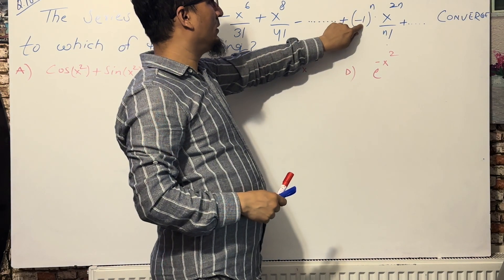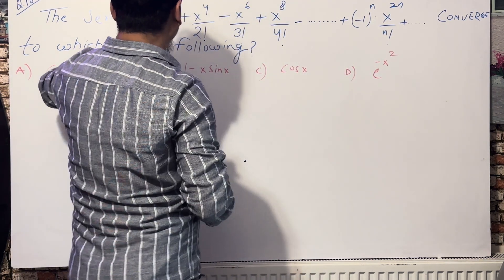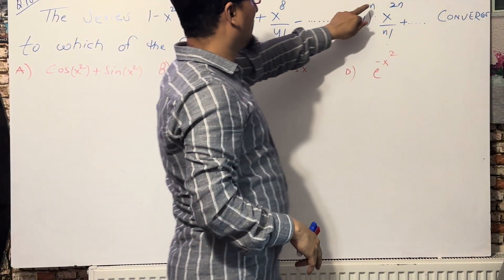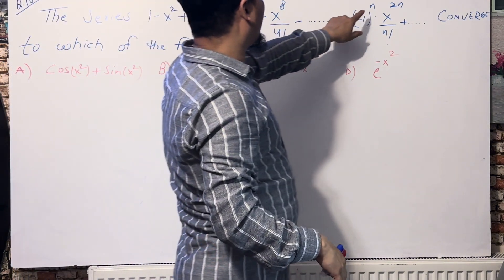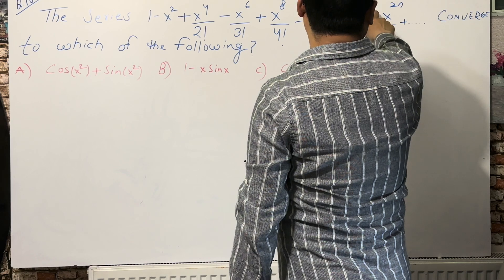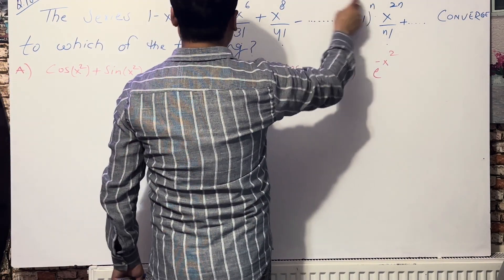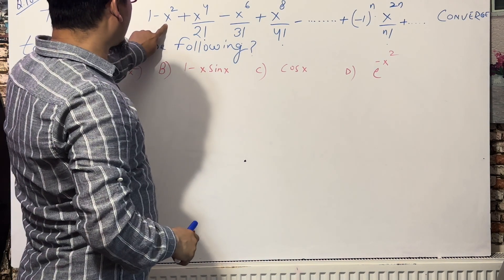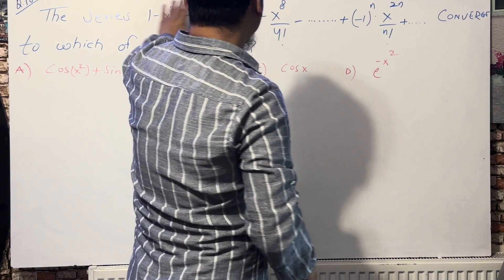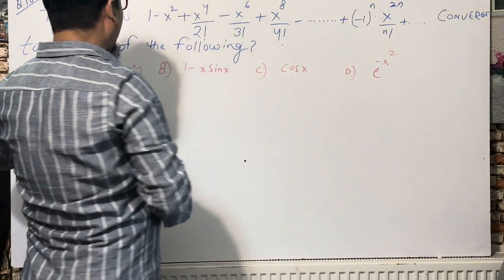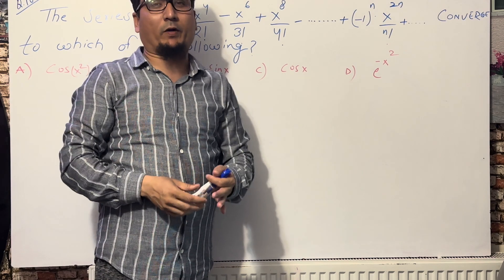The general term is given as minus 1 to the power n, times x to the power 2n, divided by n factorial. To verify: if n equals 0, minus 1 to the power 0 is 1, which is the first term. If n equals 1, we get minus 1 to the power 1, giving the second term. If n equals 2, minus 1 squared is positive. The series converges for this function. I will now solve this question, but first I want to develop something.